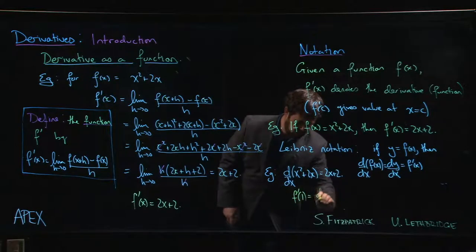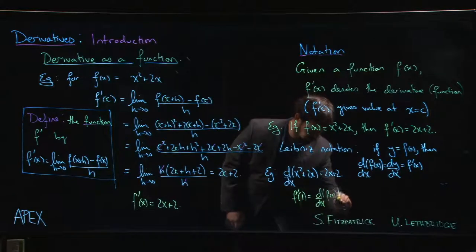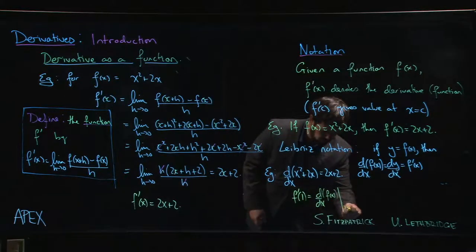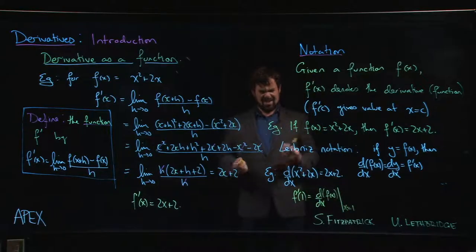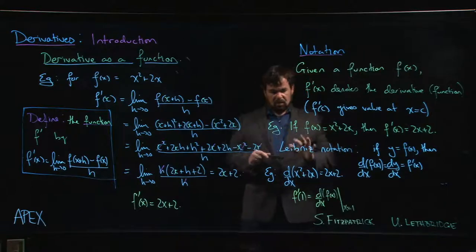Well, what we're going to do is we're going to take the derivative of f of x, and then we're going to evaluate - and we draw this vertical line to say we're going to evaluate - and we're going to evaluate that when x equals 1. That's really clumsy notation.